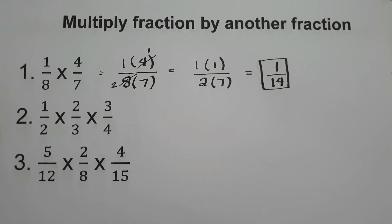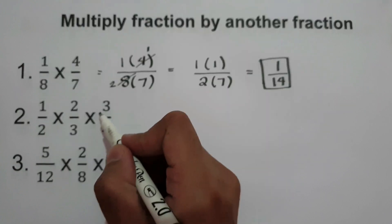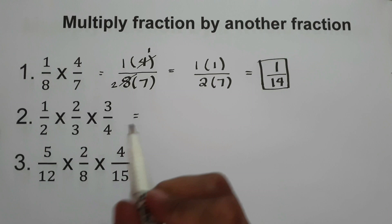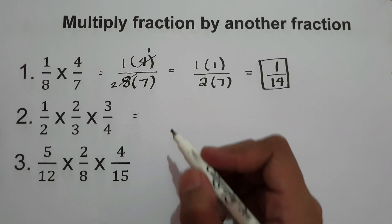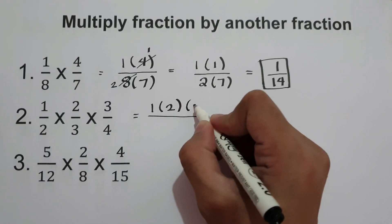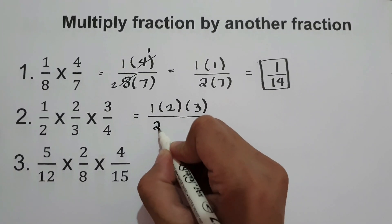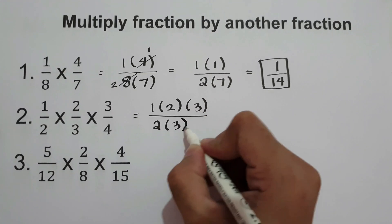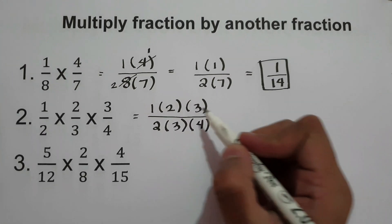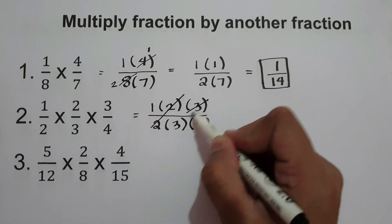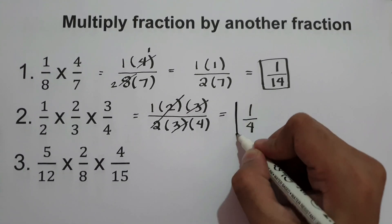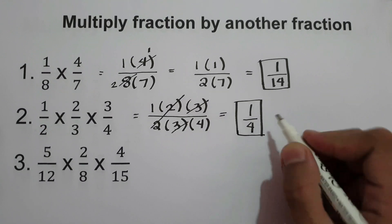What about number 2? We have 1 half times 2 thirds times 3 over 4. We simply multiply all the numerators and all the denominators: 1 times 2 times 3 over 2 times 3 times 4. We can cancel both 2 and 3, giving us 1 over 4. So the answer is 1 fourth.